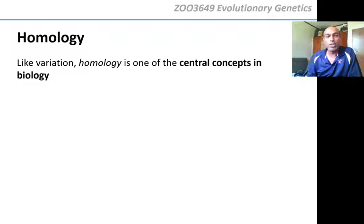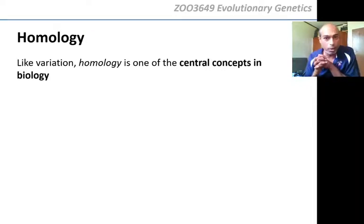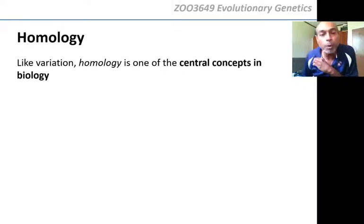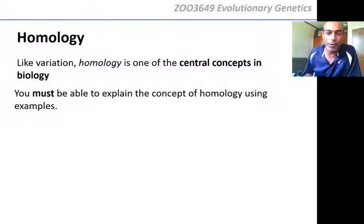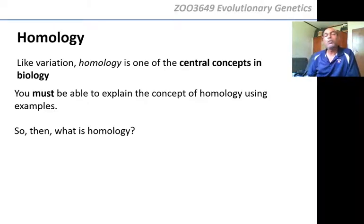This is a concept in biology that you can't be a biologist and not understand. Everything in biology stems from an understanding of homology. Like variation — I keep saying variation is a very central concept in biology — homology is the other central concept. You can't not know about this and get a BSc in biology. So you're going to be examined on this. At a third year level, you must be able to explain the concept of homology using examples.